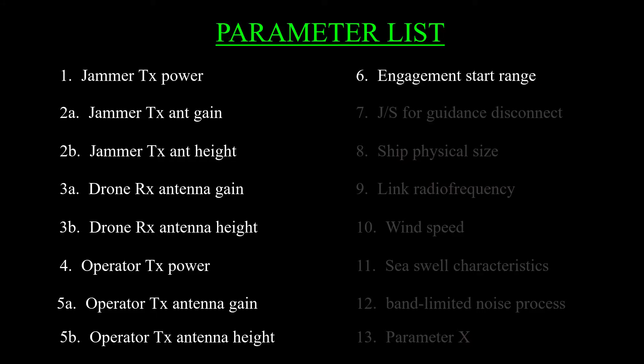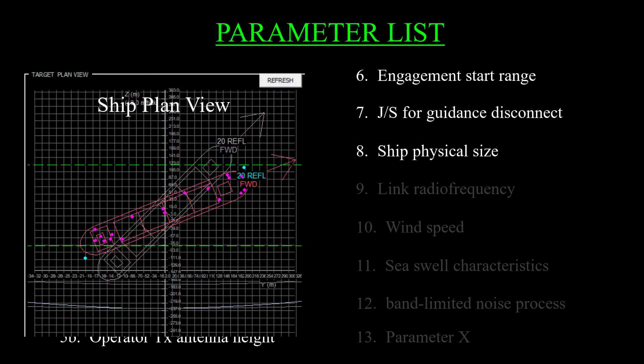Six, the engagement start range. Seven, the jamming to signal ratio in the drone receiver that blocks the guidance signals. That's a threshold I mentioned before. Eight, the ship physical size because we have to be able to distinguish hits from misses.